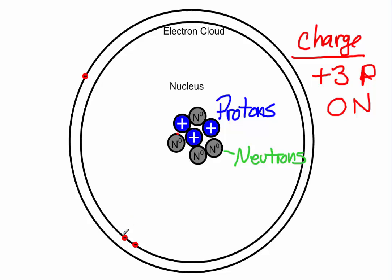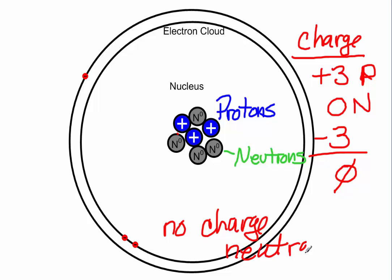And then one, two, three. We have minus three from the electrons. So three minus three gives us zero. When an atom has no charge, no charge is known as being neutral. So you'll notice that in a neutral atom, the number of protons is the same as the number of electrons.